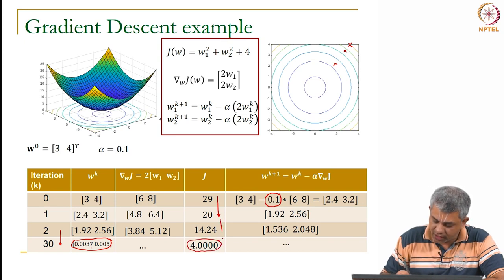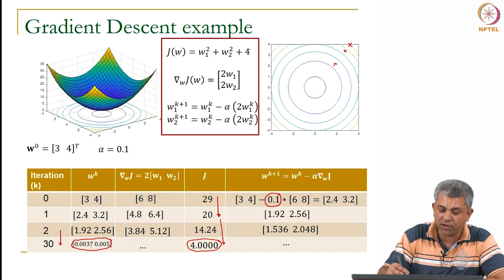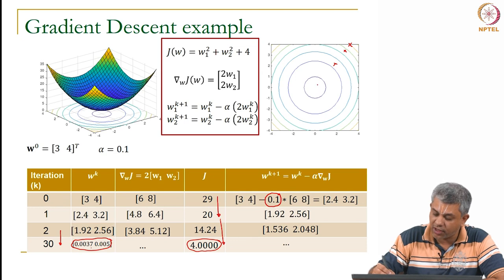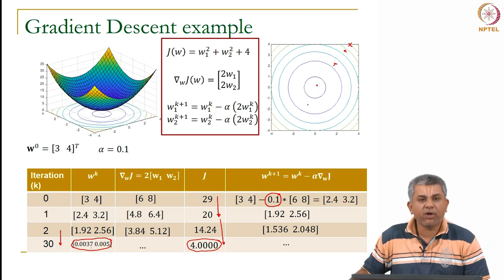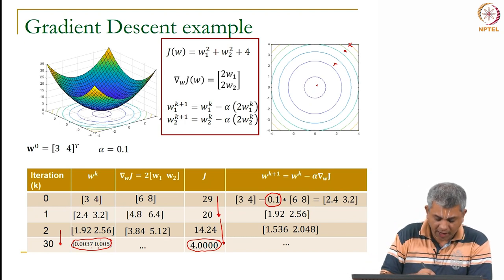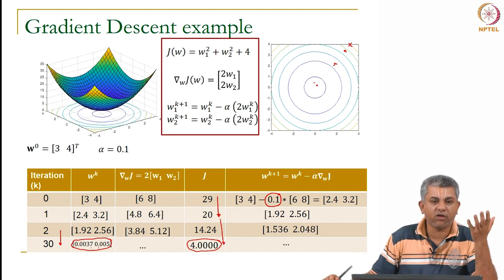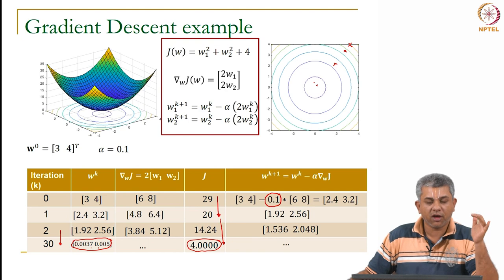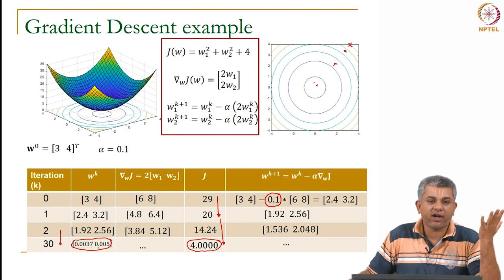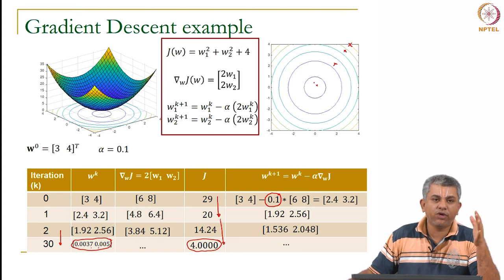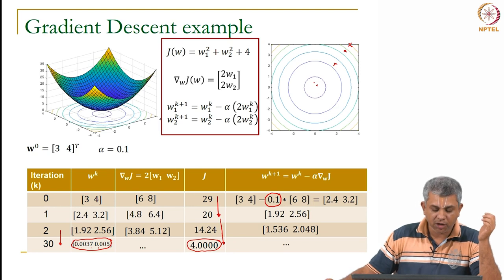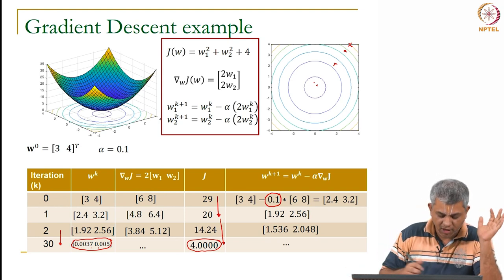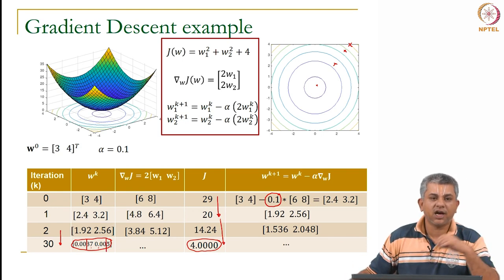So we are actually converging slowly, and after 30 iterations we have come close to the origin. However, we have not actually come to the total minimum (0, 0), and with alpha = 0.1 you will never really reach it exactly because it only keeps multiplying by small factors. Theoretically it takes infinite iterations to get to (0, 0), though numerically it will stop below machine epsilon. So if you need to find the absolute minimum where grad j goes to 0, you might need a stopping criteria — for example, saying you are happy with two decimal places of accuracy. We will see how to do that in the next video.